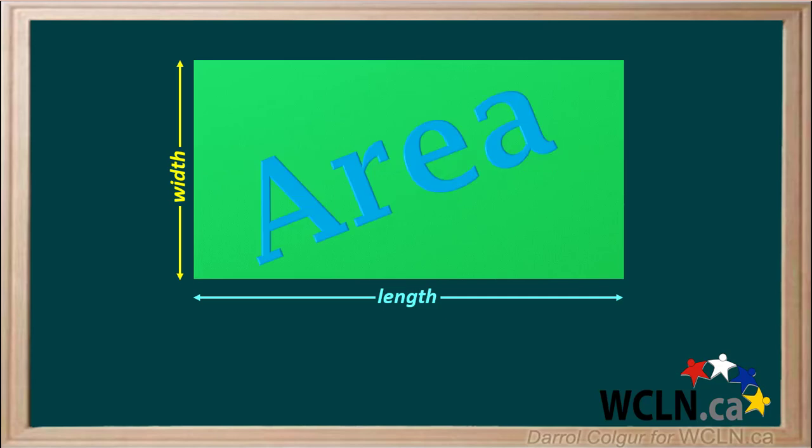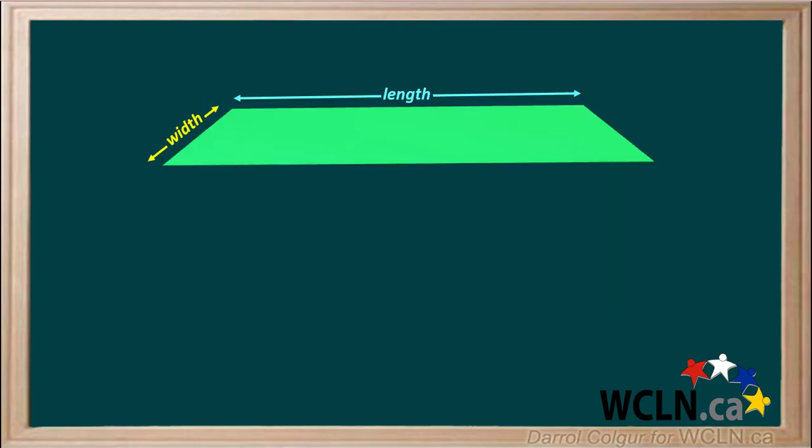We can find the area of a 2D object by taking the length times the width. We'll flip this rectangle a bit, so we're looking at it like this.